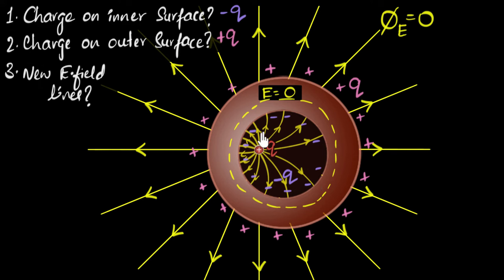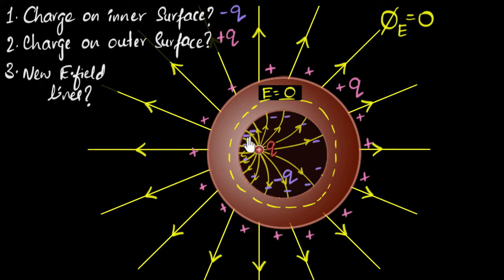How would the charge distribution on the inner surface look? Would it be uniform, or would some parts have more concentration and some less? Because the charge is closer to this side of the surface, the electric field lines there are stronger and closer together, while on the far side the field is weaker. So we can guess there should be more negative charges on the near side and fewer on the far side — charges will be more concentrated on one side and less concentrated on the other.